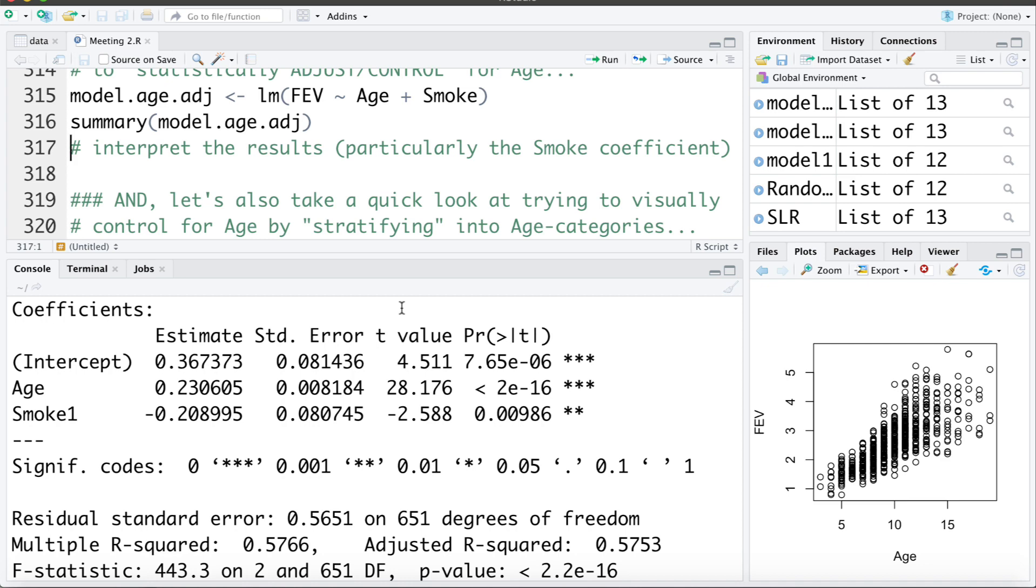So this is what we mean by statistically adjusting for age or statistically adjusting for this confounder. Now we are going to expand on the idea of confounding and explore it further but hopefully this has given you a good initial idea of what confounding is and how it can distort the effects we are interested in.